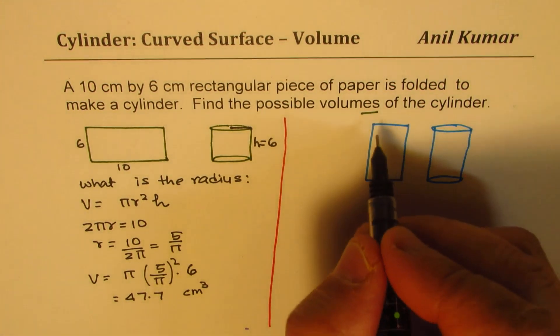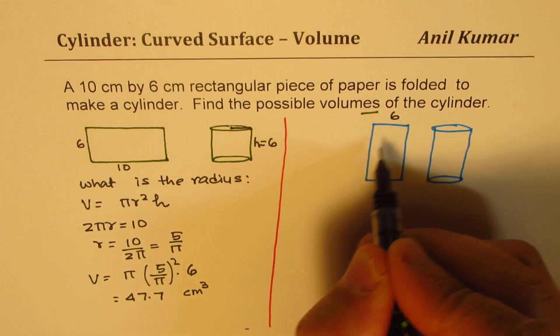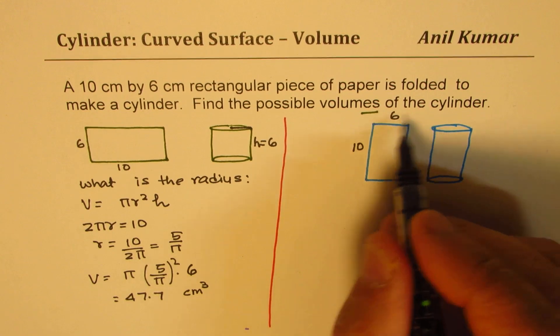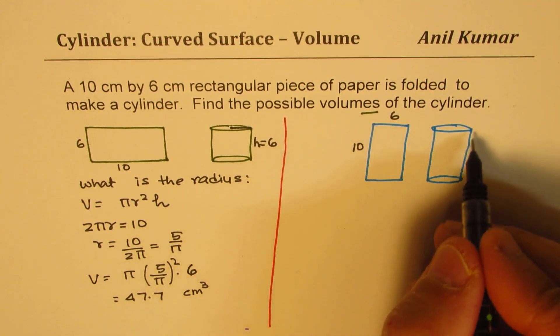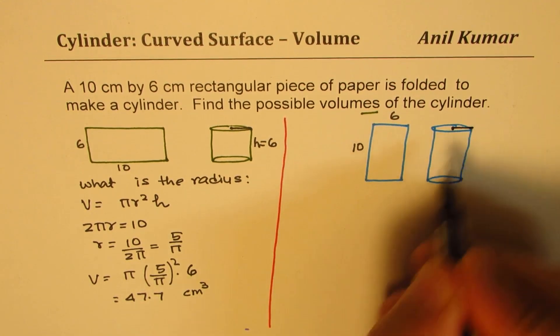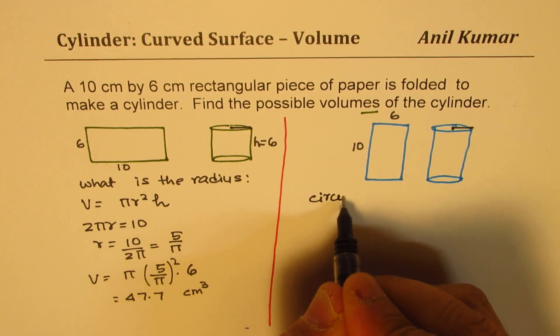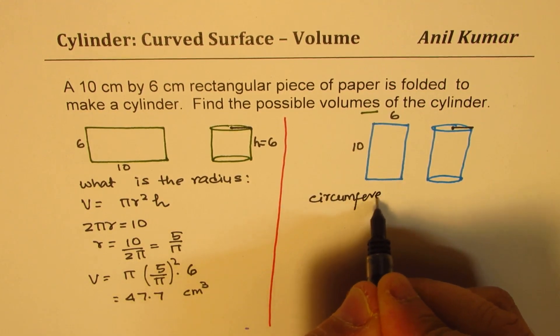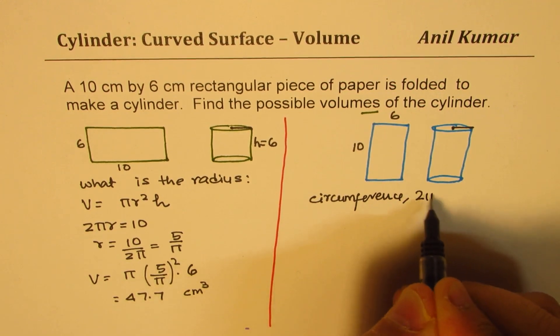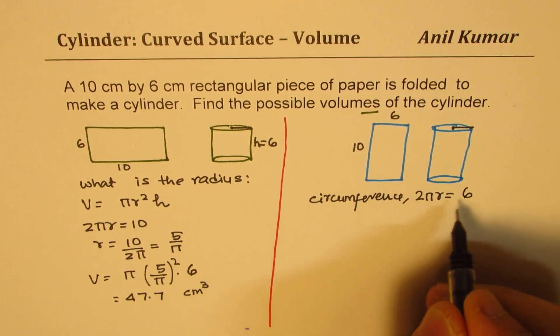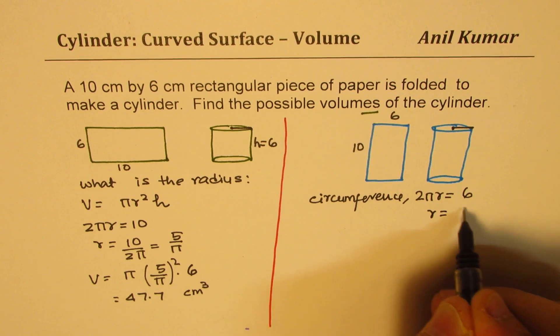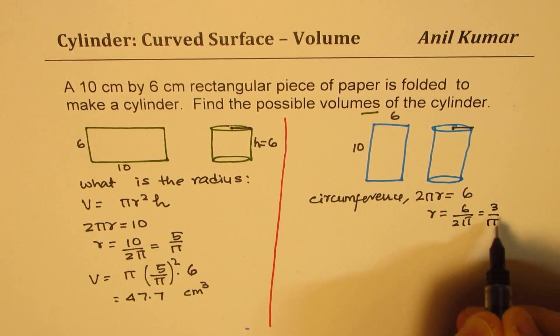Let's do the next one. In this case, 6 is this, and 10 is the height. So when I fold it, so I have a very thin cylinder. So in this case, the circumference, which is 2 pi r, should be equal to 6. So the radius r is 6 over 2 pi, or 3 over pi, correct?